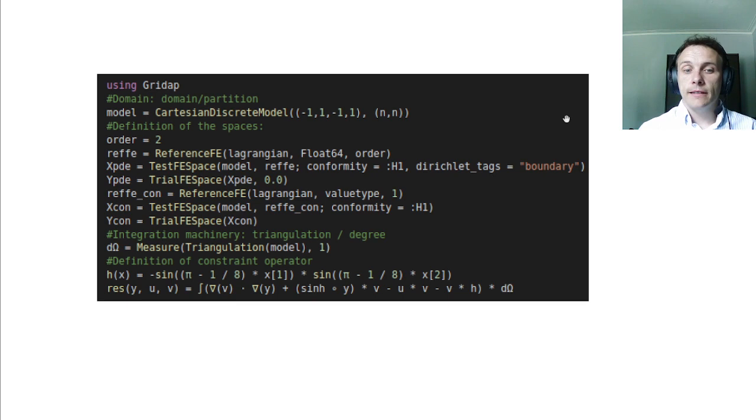Here it is: essentially, in a dozen lines of code, you can define your domain and your PDE. Using Gridap functions, you can define here our square minus one to one for our Poisson-Boltzmann equation. Since the unknowns are functions, you have to define functional spaces as well. That's probably the hardest part of it, but manageable. I will probably refer to the Gridap documentation for this part. Then you provide the different parameters for the numerical integration and very simply define the PDE operator.